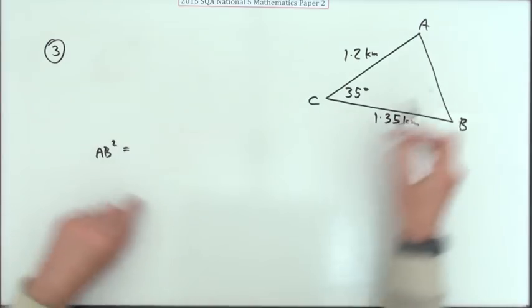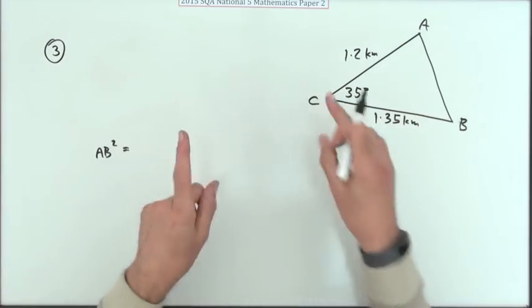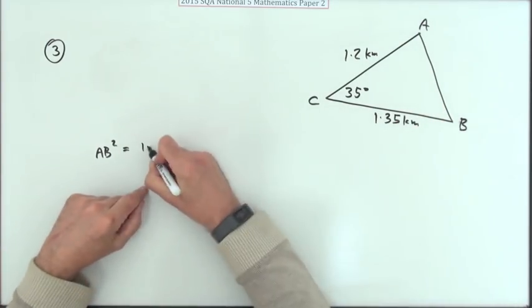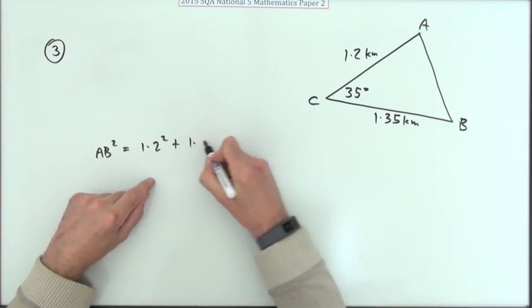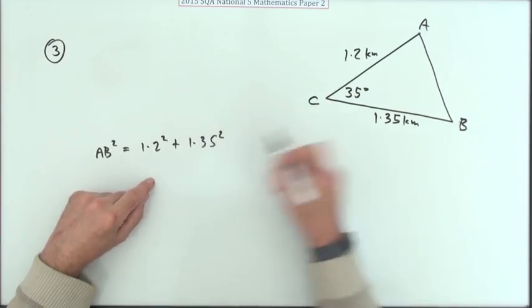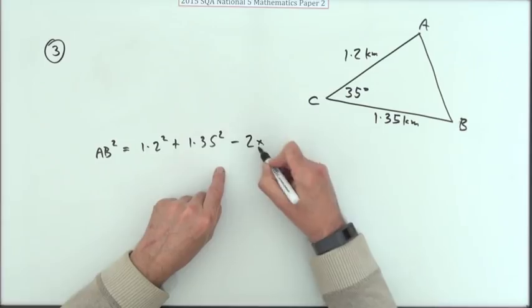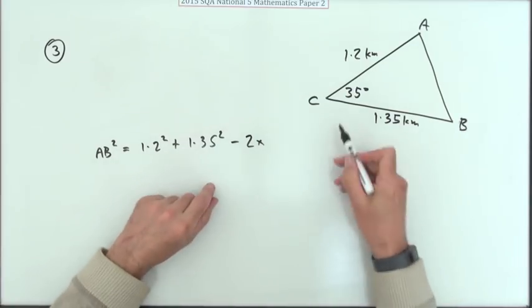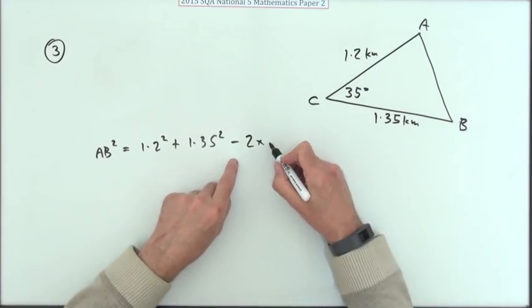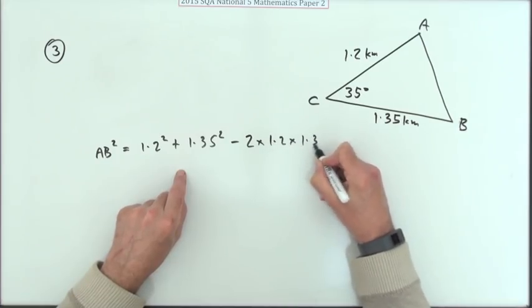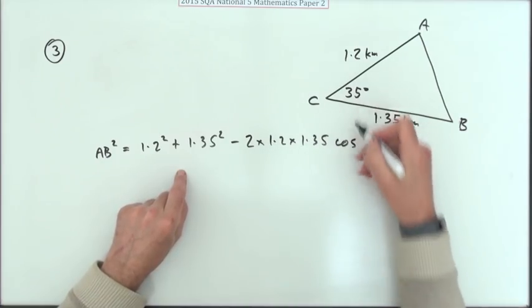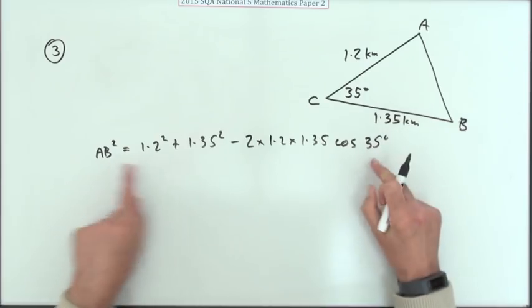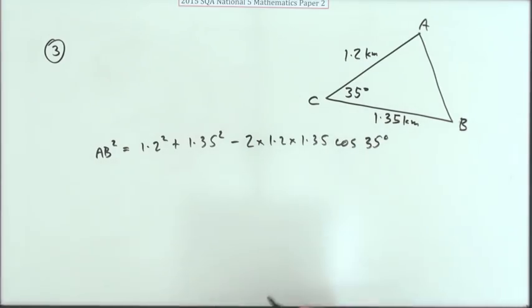I'm just going to leap in with AB squared. AB squared will be following the pattern that's established. That'll be 1.2 squared and 1.35 squared, being the other two sides, minus two times them. Notice just the same as Pythagoras, only corrected for not being the right angle. Two times 1.2 times 1.35 times the cosine of the angle in between, which is the partner to this one of course, cos 35.